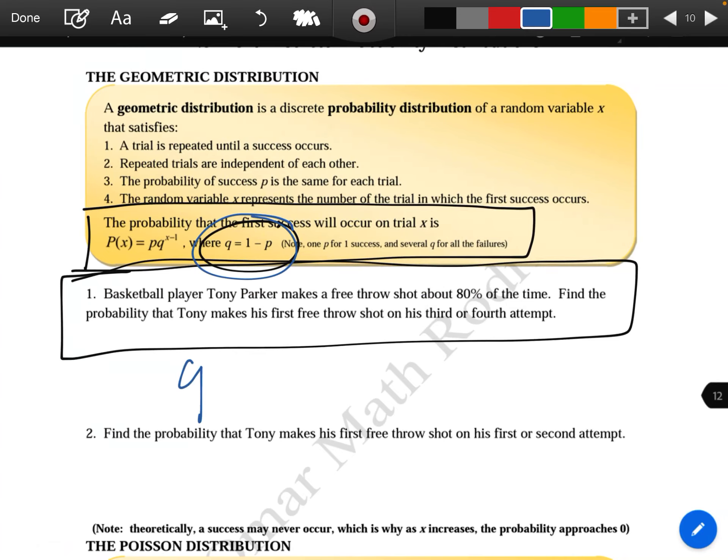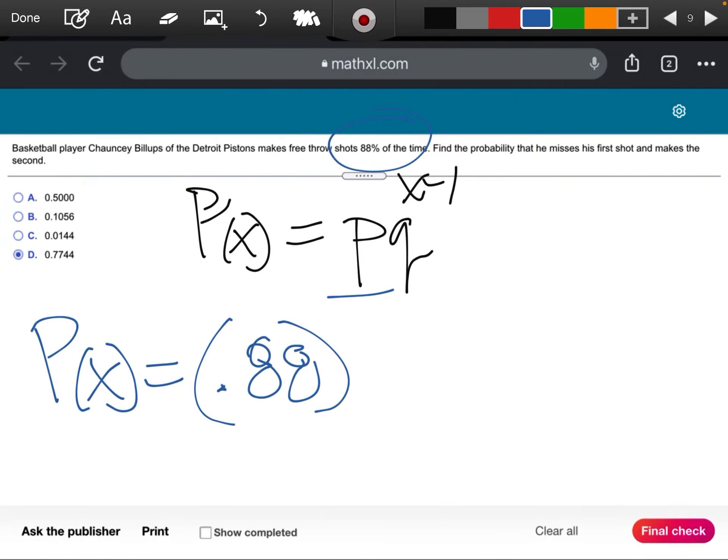I'm putting this in parentheses because I'm multiplying. Now remember what q is equal to. Q is equal to 1 minus p, so q is going to be 1 minus 0.88, and that should give me 0.12. So my q is 0.12 to the power x minus 1.